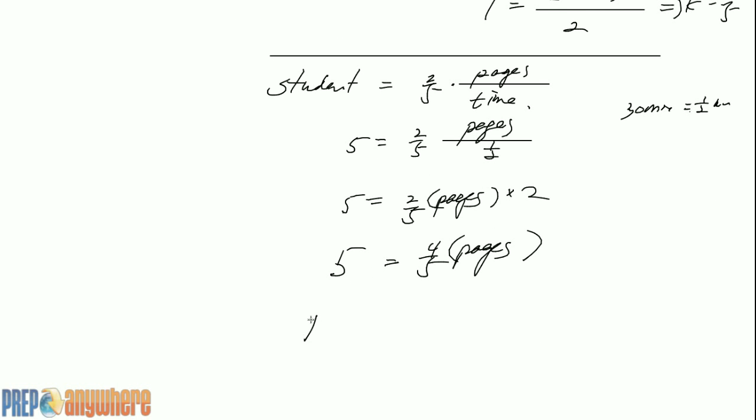Number of pages the students read is 25 over four. That's about six and a quarter of a page. So six pages and maybe a quarter way down. Thank you.